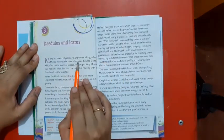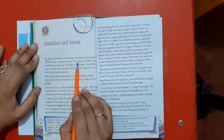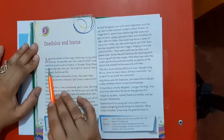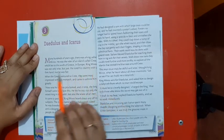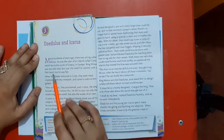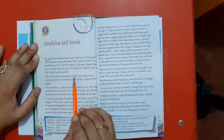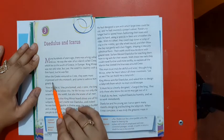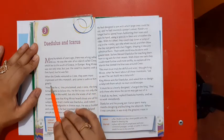Many hundreds of years ago, there was a king called Minos. He was the ruler of an island called Crete, which lies to the south of Greece in Europe. King Minos was not only wise, but just. He ruled his country with a firm hand, but he was fair. When the Greeks ventured to Crete, they were most impressed with this monarch and came to admire him greatly.